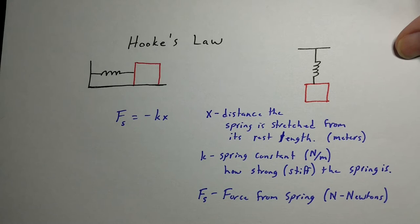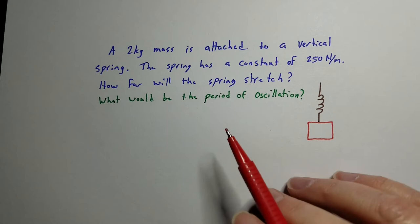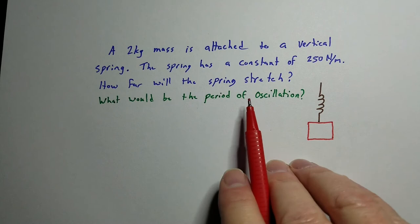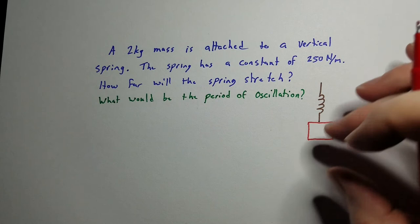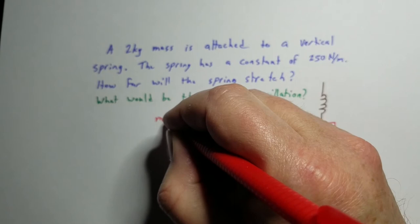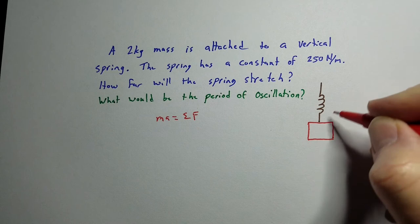So let's take a look at an example. Okay. I've got a two kilogram mass attached to a vertical spring. The spring has a constant of 250 newtons per meter and I want to know how far that spring will stretch. Well, the way it works is like this. When we put that on there and let it stretch, not let it bounce and just let it see how much it will stretch,